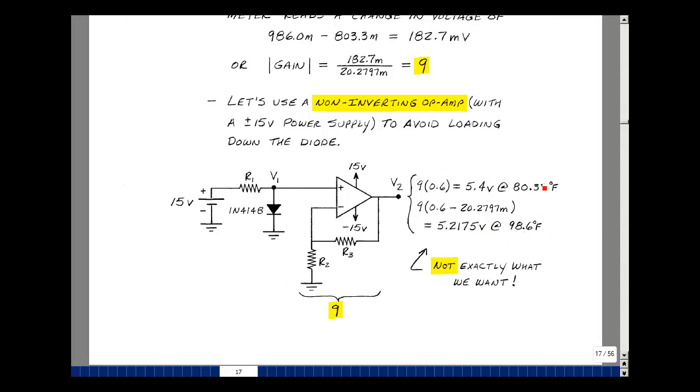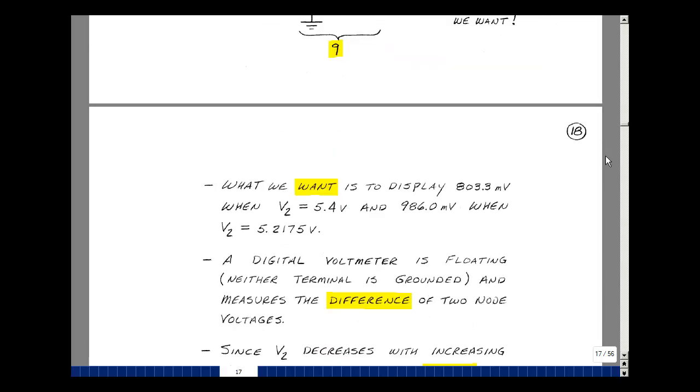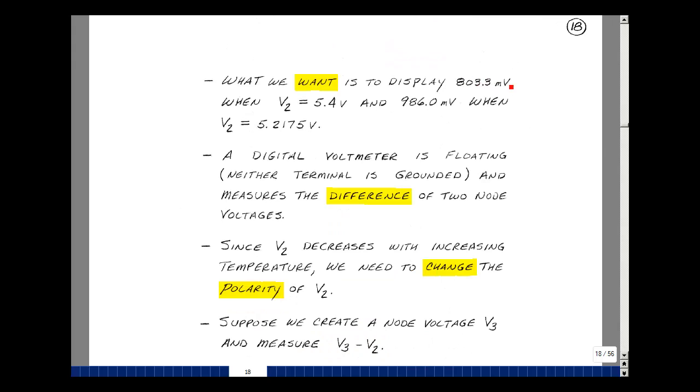What we want is to display 803.3 millivolts when V2 equals 5.4 volts and 986 millivolts when V2 equals 5.2175 volts. The cheap digital multimeter is floating because it's battery operated and takes the difference of two node voltages. Node voltage V2 is going to decrease with increasing temperature. We need to change this polarity sign on V2 so that we can get an increase in voltage with an increase in temperature. We could do that with an op-amp circuit or simply use the negative terminal of the digital multimeter.